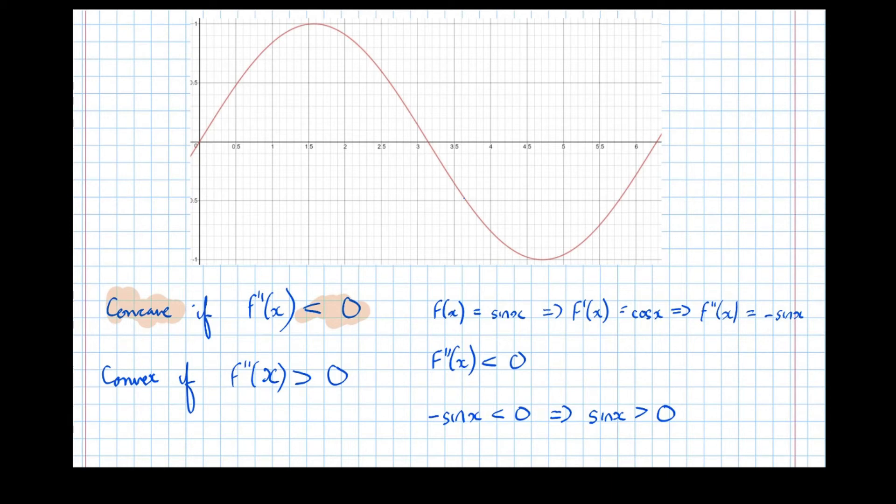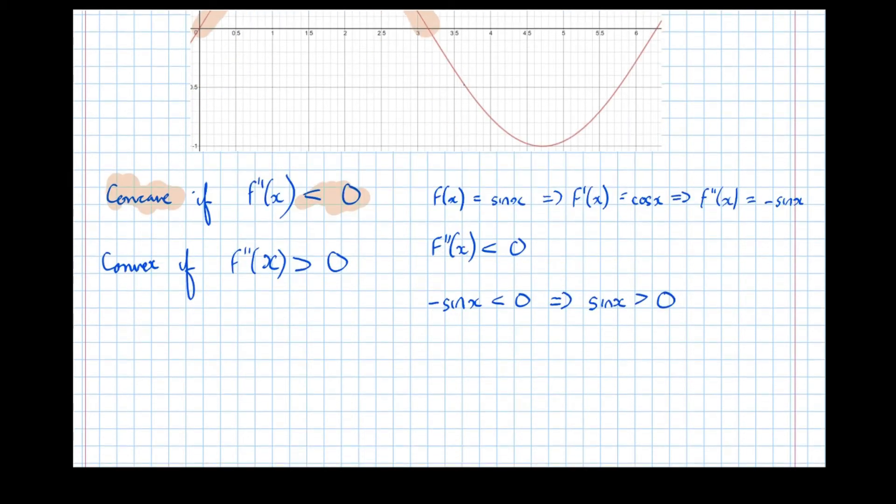So I can see that the shape is concave when sine x is greater than 0. Well, in this restricted portion of the graph, I can see that sine x is greater than 0 here in this section. Therefore, F(x) equals sine x is concave for 0 less than x less than pi.